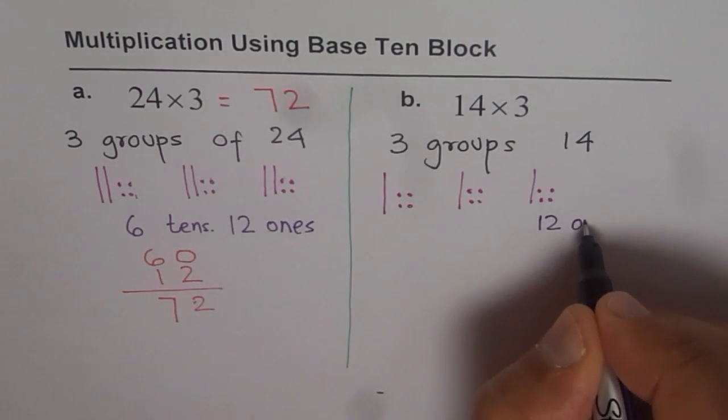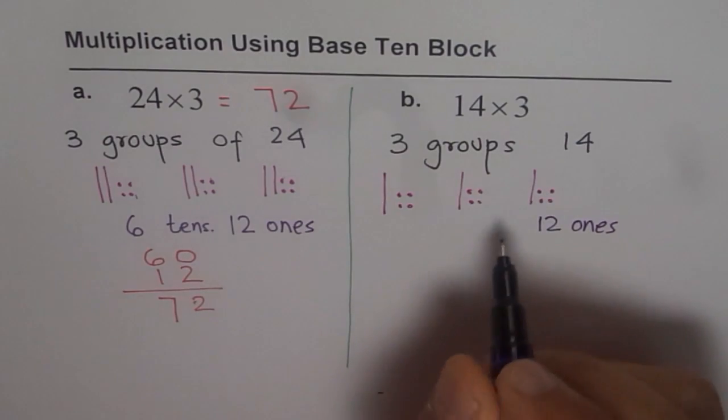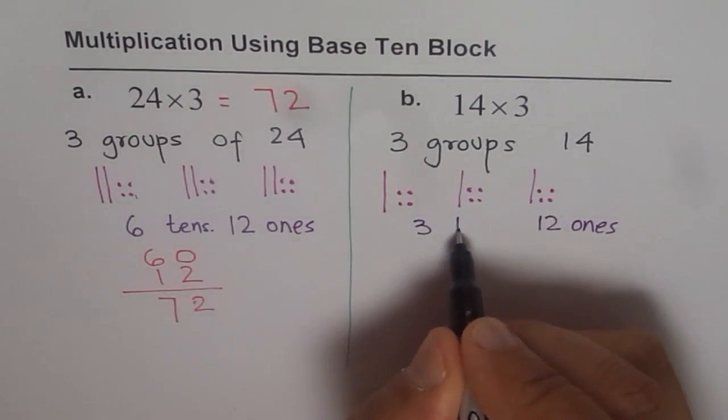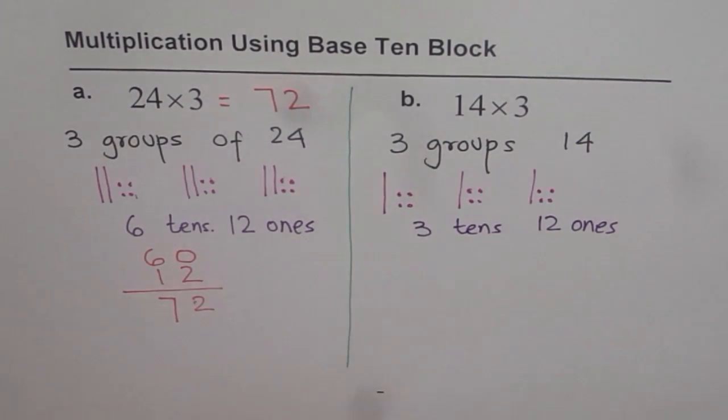So, it is 12 ones and 10's are 1, 2, 3. And 3 tens. 12 ones and 3 tens. Okay?